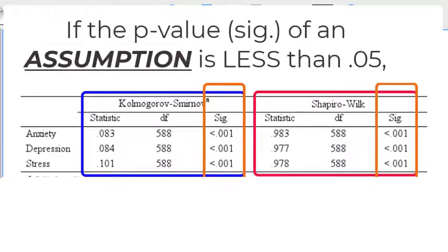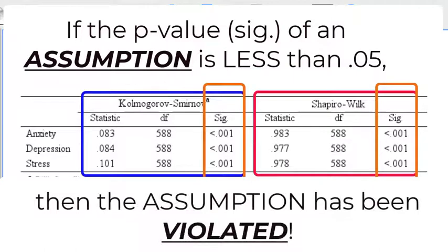Remember, when you're checking assumptions, if the p-value is less than 0.05, in other words, if you get significance while checking an assumption, that means you violated that assumption. I'll say that again. Students get confused on this a lot.